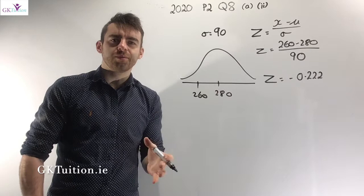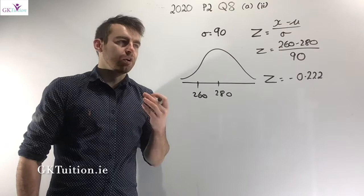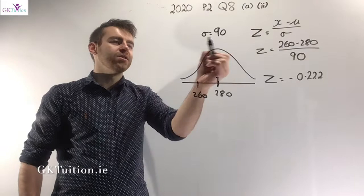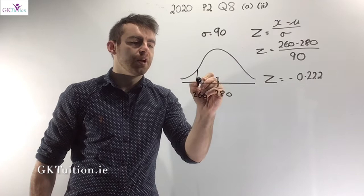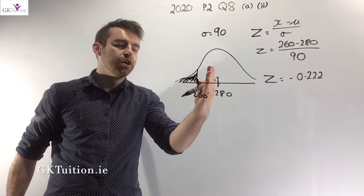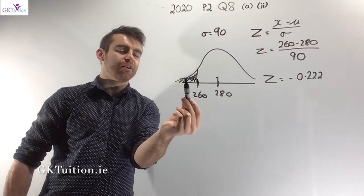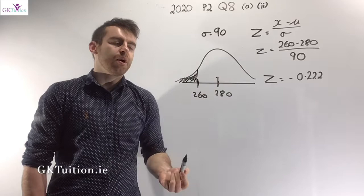In part A2, anyone who gets above the 40th percentile is allowed to retake the test. Eileen got 260 marks, which is a little below the average of 280. I need to figure out the proportion of people who sat this test and did worse than Eileen. If that proportion is greater than 40%, Eileen can retake; if less than 40%, she cannot.